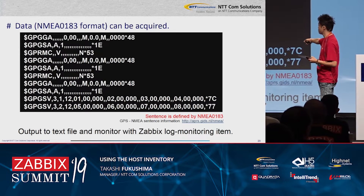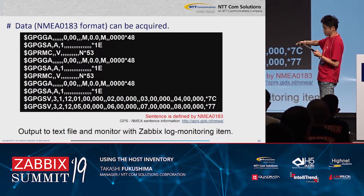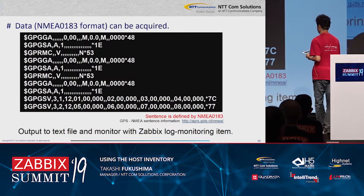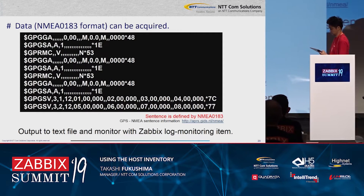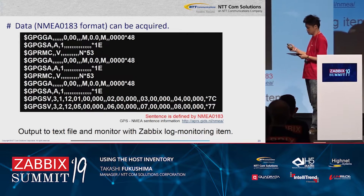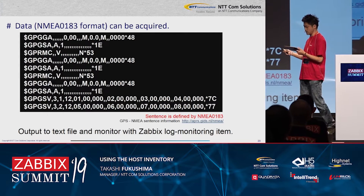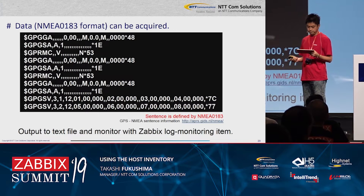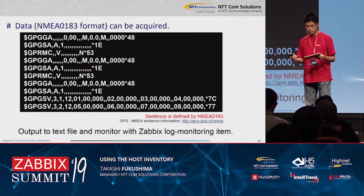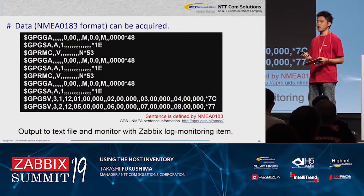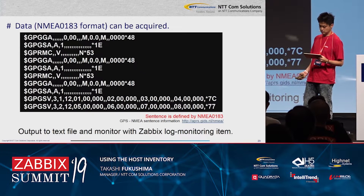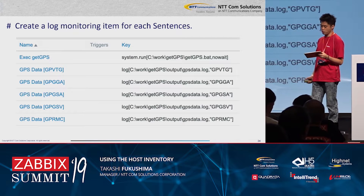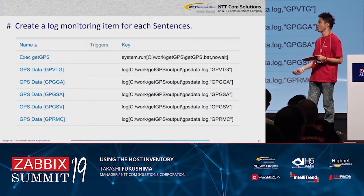So I used TeraTerm to connect to the GPS receiver by COM port. TeraTerm is the most famous terminal client in Japan. TeraTerm has a macro function, so I created a TeraTerm macro and executed it at regular intervals. Data can be acquired. This data format is NMEA0183. First, this data is output to a text file.